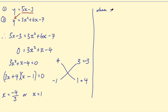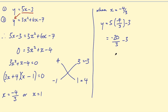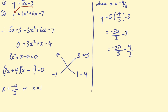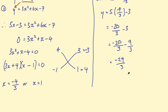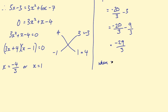When x equals minus 4 over 3, y equals 5 times minus 4 over 3 minus 3. So 5 times minus 4 over 3 is minus 20 over 3, minus 3. To subtract these, I change 3 into a fraction over 3 — that's minus 9 over 3 — then subtract the numerators: minus 20 minus 9 is minus 29 over 3. So that's one solution.